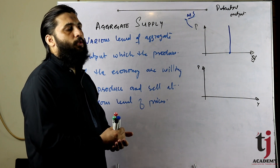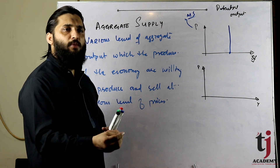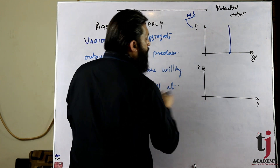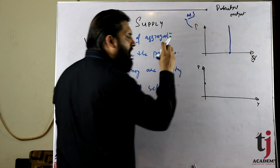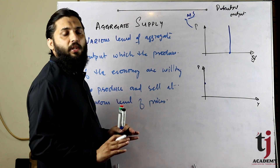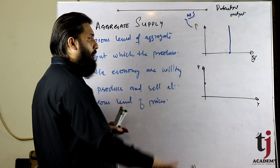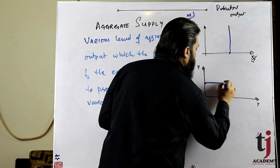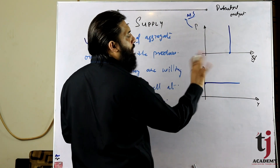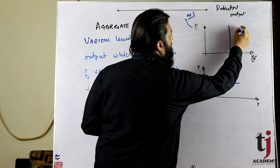यह situation बिल्कुल COVID-19 जैसी है जहाँ lockdown की वजह से लोगों के पास काम नहीं था और वो minimum wage पर भी काम करने को तैयार थे। Wage level minimum पर आ गई और resources इतने idle थे कि जितना produce करने की कोशिश करेंगे, उतने resources given price पर मिल जाएंगे — pressure price पर नहीं आएगा। इसलिए Keynesian range में AS curve horizontal नजर आती है।